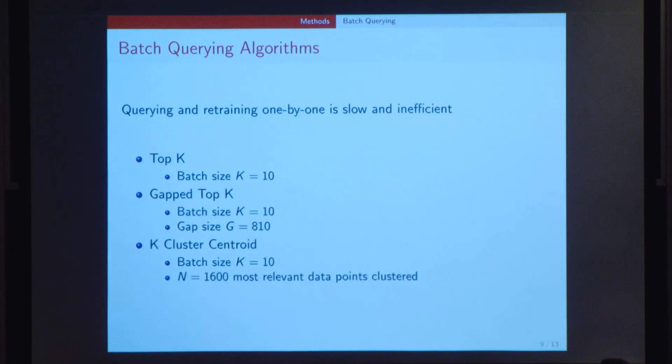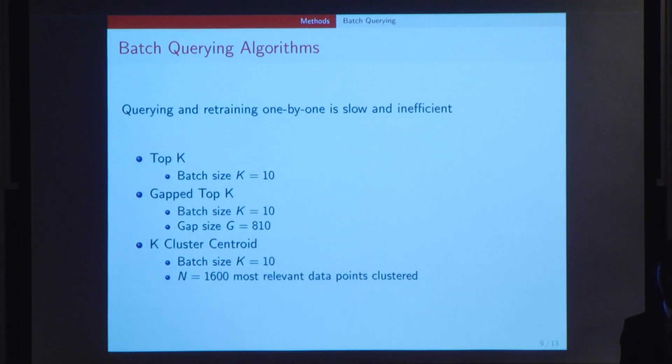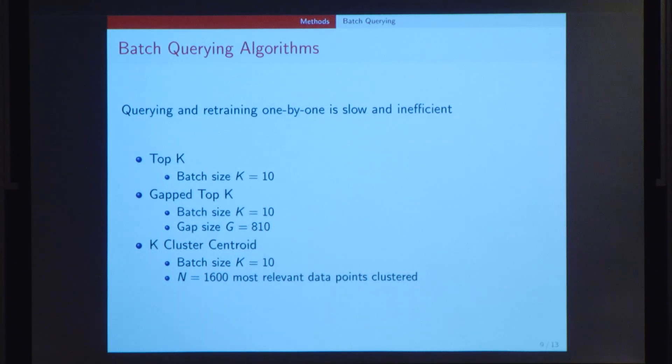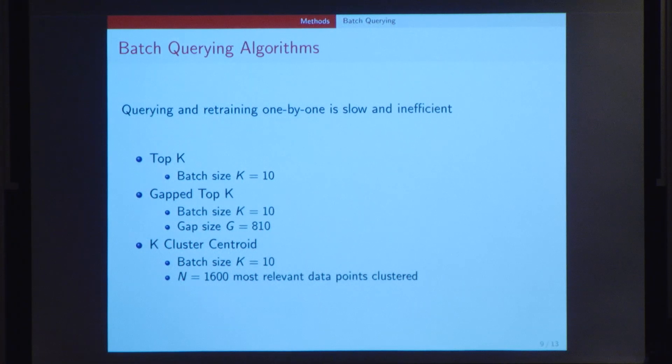The first of which is known as the top-K algorithm, which essentially involves selecting the K most uncertain examples and creating a batch out of that. This is a very simple but also a naive method of batch querying because it doesn't account for a sort of diversity of spread in the data labels. On the other hand, the gap top-K is similar to top-K, but in this case, it introduces a certain diversity in the training data points by introducing a gap between the selected data points.